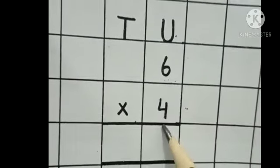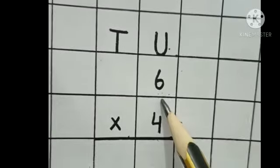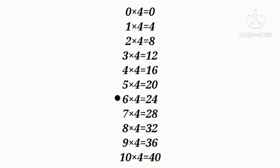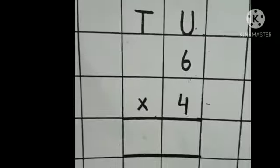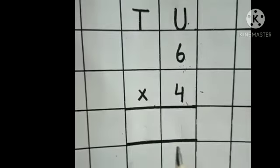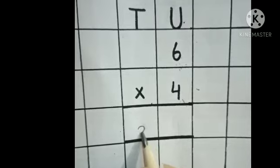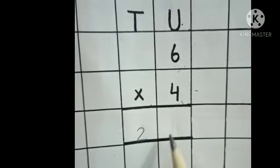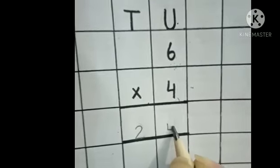Next one. This is number 6 and this is number 4. 4 ka table hum 6 tak read karenge. 4 times 6 is 24. Jab humne 4 ka table 6 tak read kiya, to hamare paas answer aaya 24. Ab hum yahan write karenge 24. 2 T ke neeche, 4 U ke neeche.